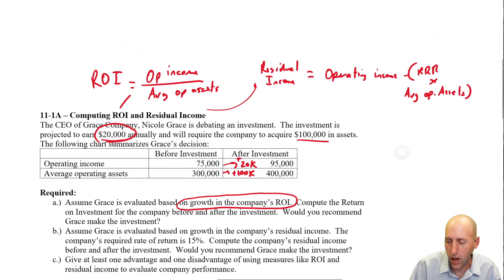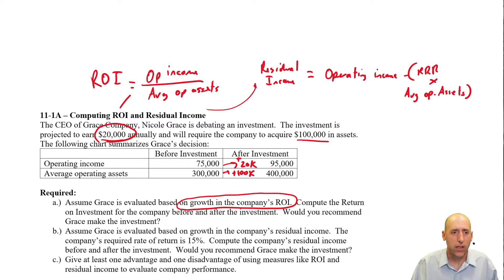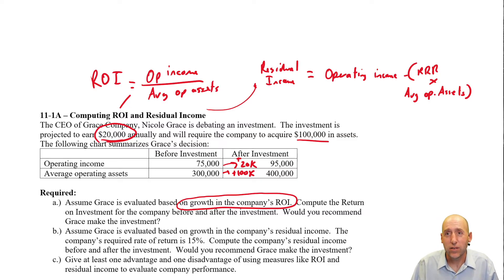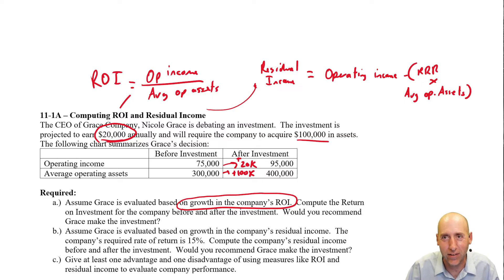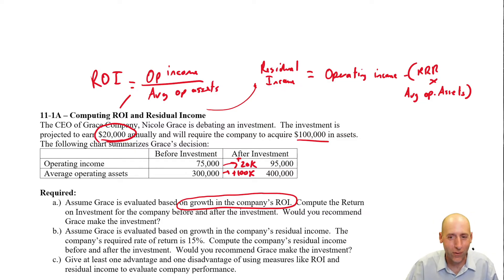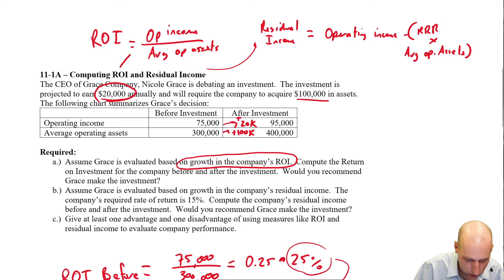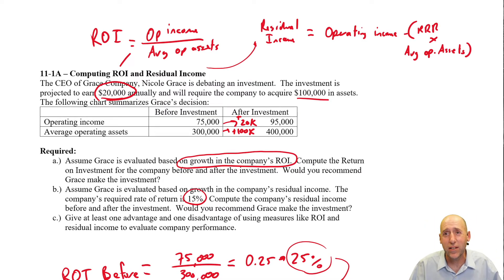The formula for residual income is operating income minus (RRR × average operating assets). The required rate of return reflects that the company has limited money and limited assets. If an opportunity only earns 2%, you could get that from a savings account. You need to overcome the risk and beat alternatives like an index fund averaging 8%. This company's required rate of return is 15% — meaning they won't invest unless they expect a 15% annual return.